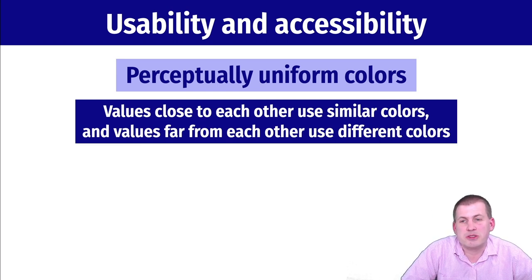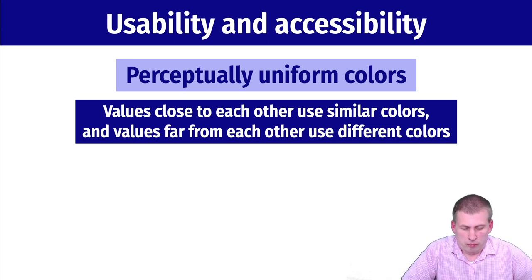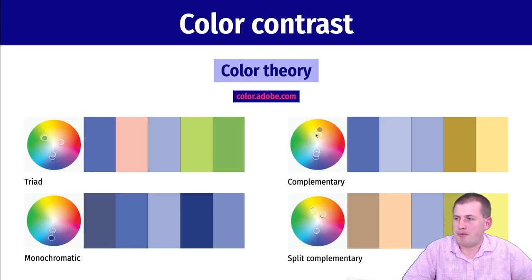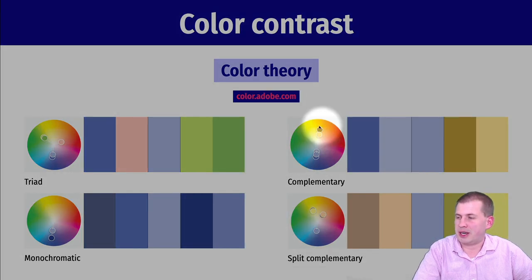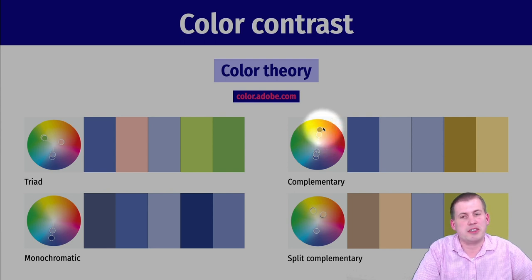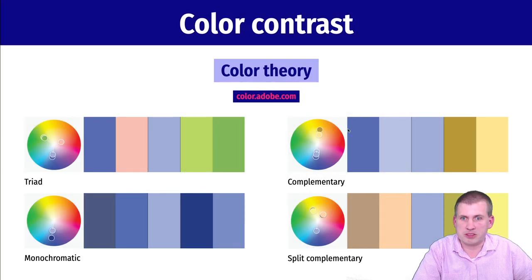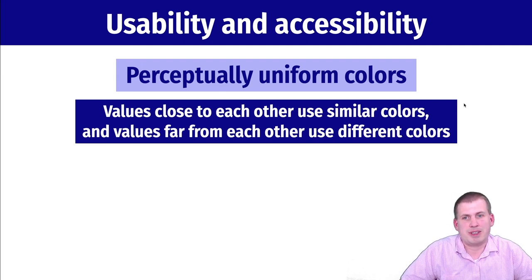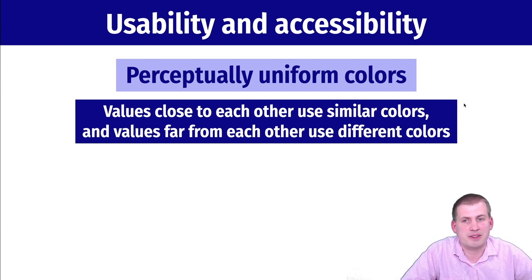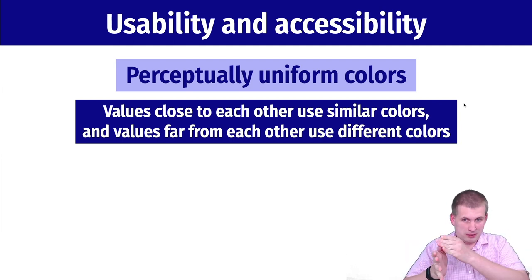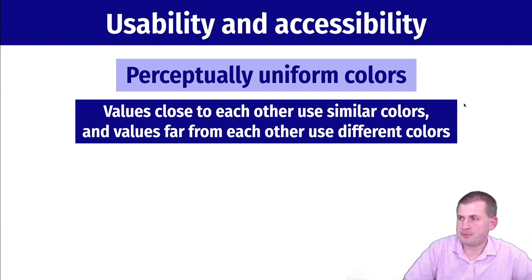One thing you should pay attention to, especially when working with colors in data, is the accessibility of those colors. There's actually math behind how distant colors are on a color wheel. When you're mapping colors onto data, you want to choose colors that are equally distant from each other — not just random colors. There are color scientists working on the best way to do this, and I'll show some R packages in the future for choosing good perceptually uniform colors that follow a color scheme.